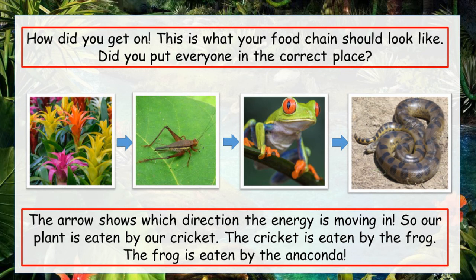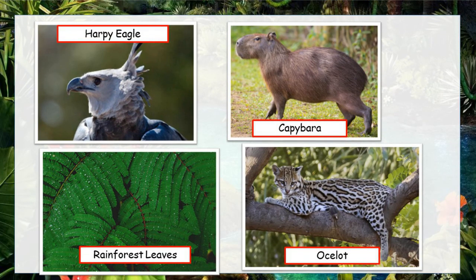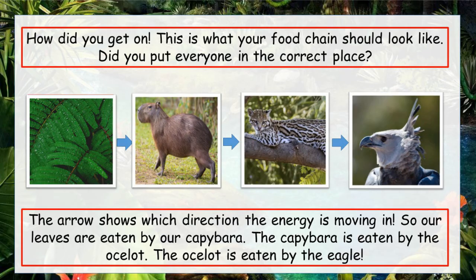Let's go for one last food chain. Here are my final four snaps. Can you put these four in the correct order? Pause the video and give it a try. Our rainforest leaves are eaten by the capybara, the capybara is eaten by the ocelot, and the poor ocelot is picked out from the sky by the eagle.